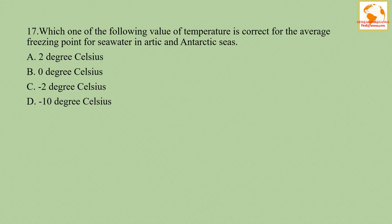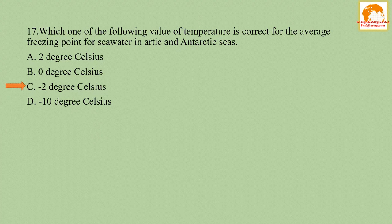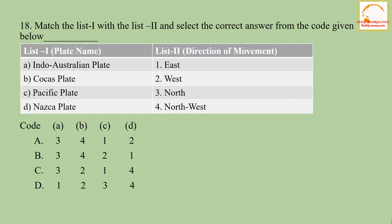Question number seventeen: which value of temperature is correct for the average freezing point of seawater in Arctic and Antarctic seas? Option A - 2°C, option B - 0°C, option C - minus 2°C, option D - minus 10°C. The correct answer is minus 2°C — that is the temperature at which seawater of the Arctic and Antarctic seas freezes.